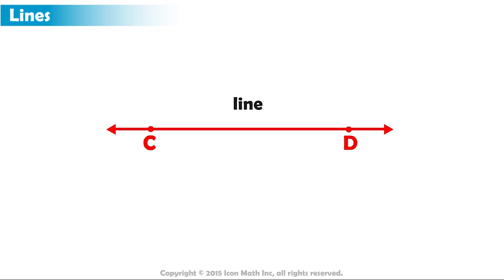We call it line CD, and we can also call it line DC. The two arrow heads indicate that this is a line which passes through C and D but goes on forever in both directions.